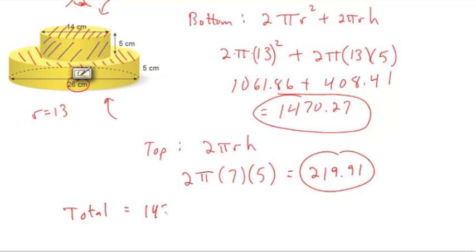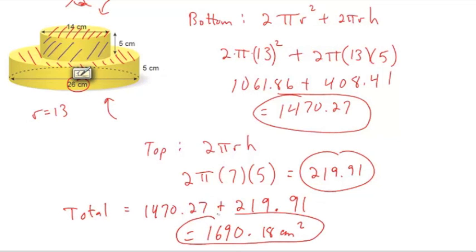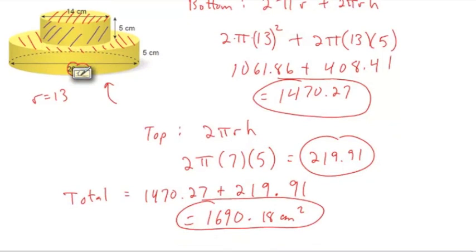And then our total is just going to be the sum of those two numbers, or 1470.27 plus 219.91. Which gives us a grand total of 1690.18 centimeters squared. Let's circle that, underline it, and there is our total, or our answer.